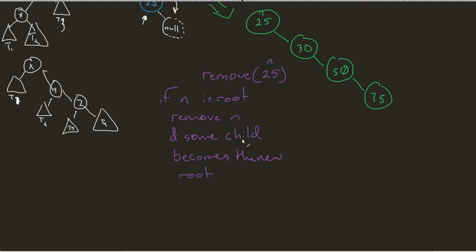Now in our situation, that's quite easy. We see that we would remove that 25 from our tree, and then we would be left with 30, 50, and 75.